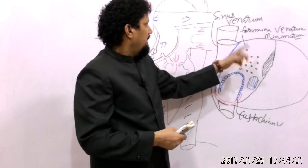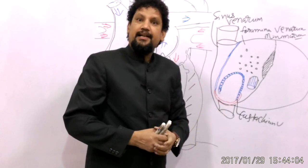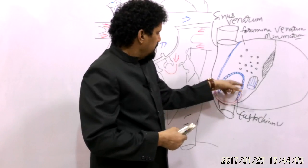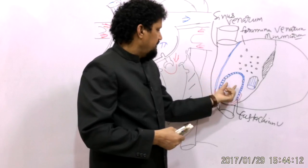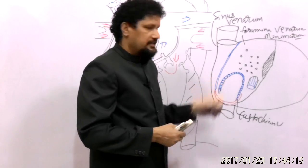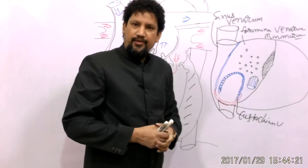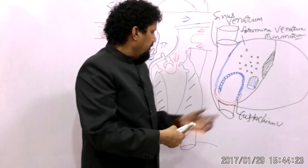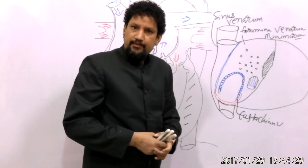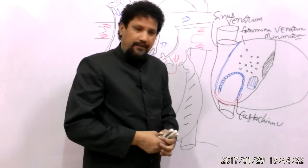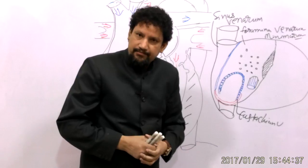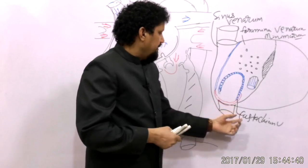The smooth surface known as sinus venarum forms the interatrial septum, and it has the fossa ovalis and the limbus fossa ovalis. The floor of the fossa ovalis is formed by the septum primum, and the limbus fossa ovalis is formed by the septum secundum. During fetal life, it has an opening known as the foramen ovale, which allows well-oxygenated blood coming from the inferior vena cava to pass directly to the left atrium, directed by the Eustachian valve.